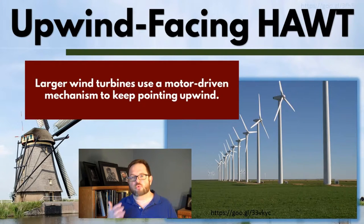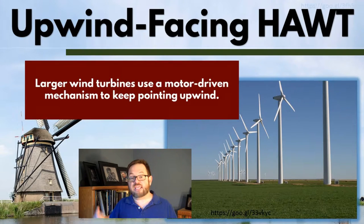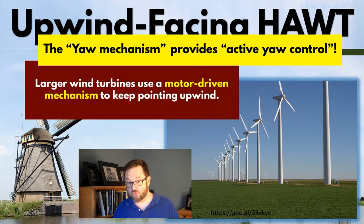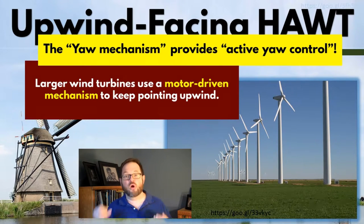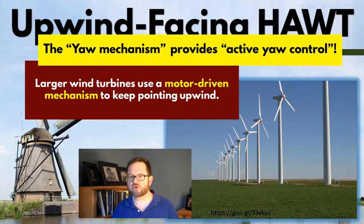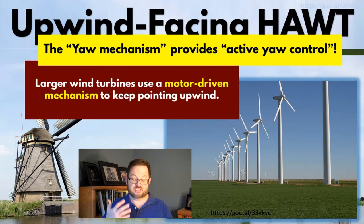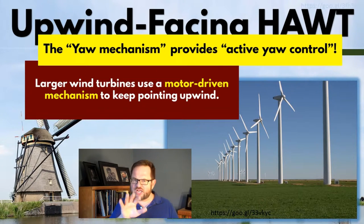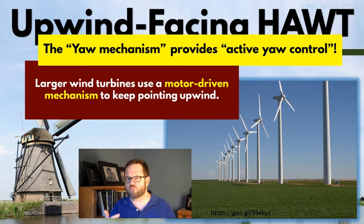So larger wind turbines are actually going to need a more sophisticated, computer-driven, motor-driven mechanism to keep the turbine very accurately facing upwind. That is a type of active yaw control, where we use sensors, computers, and motors to actively keep the wind turbine facing upwind. The yaw mechanism will be driven by motors and computers and sensors to maintain active yaw control. We're going to see some examples of how all that works in just a little bit.